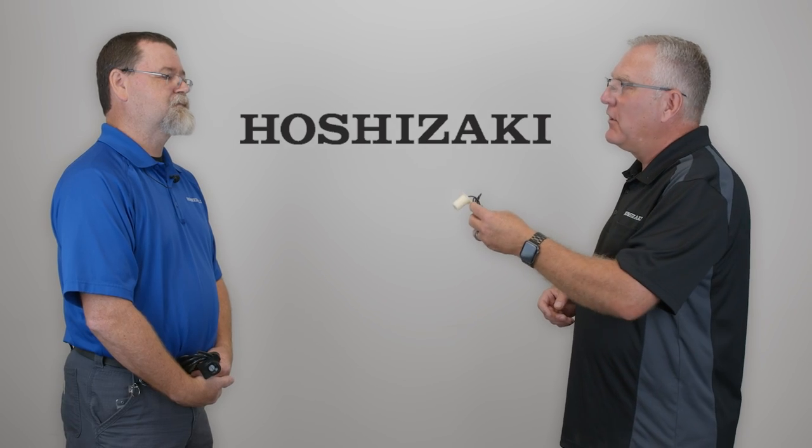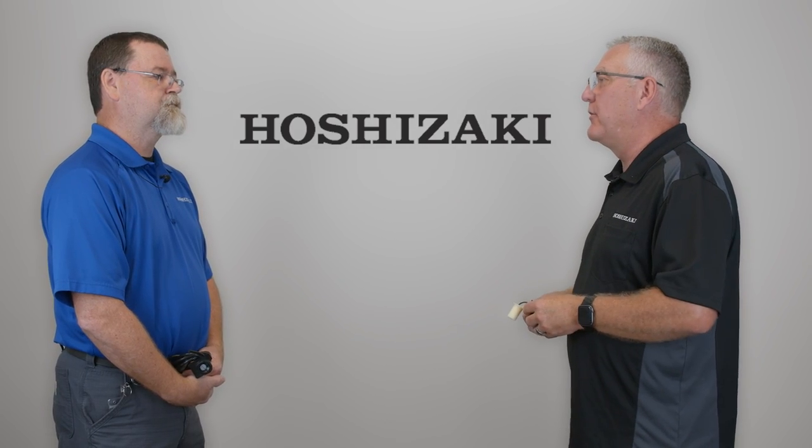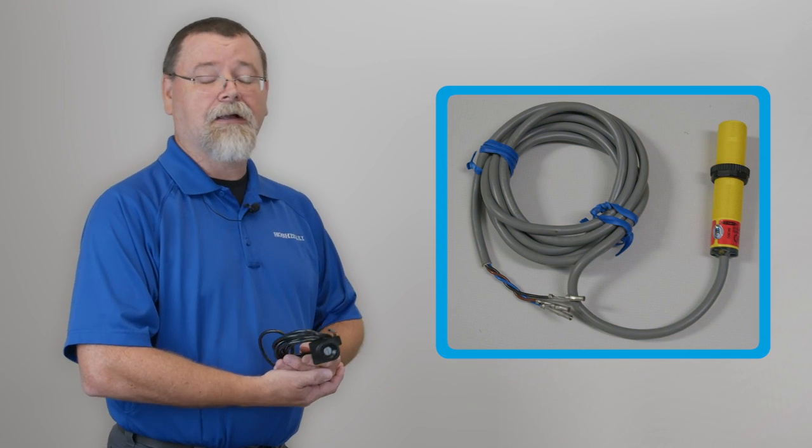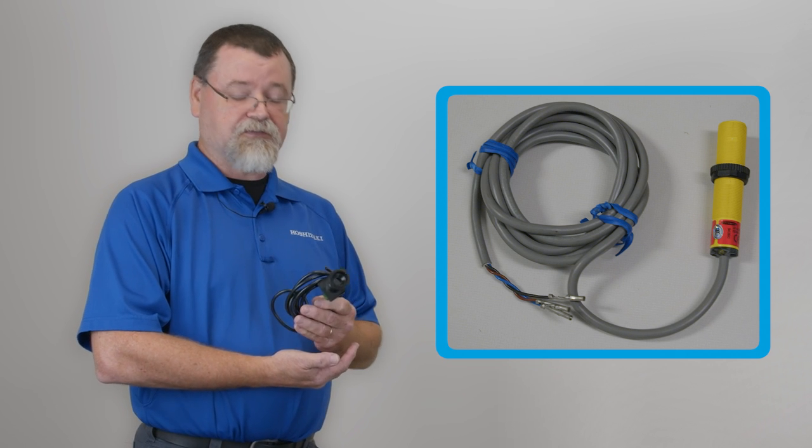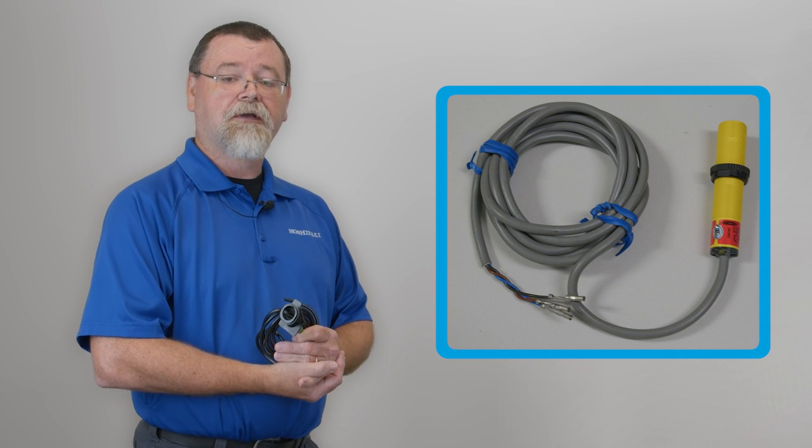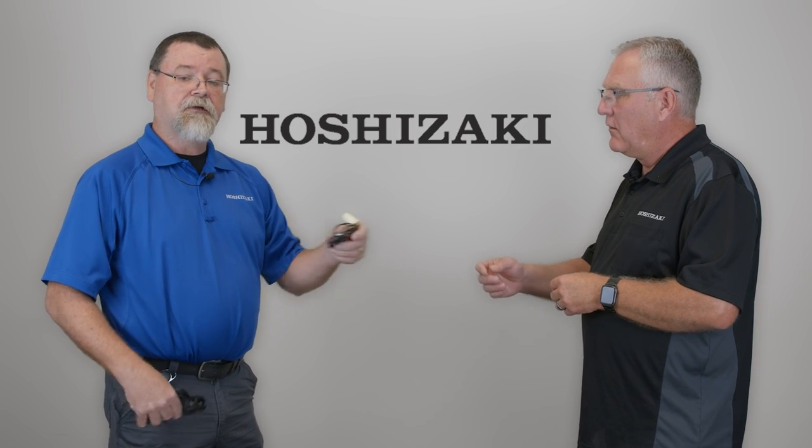Hey Mike, tell me a little bit about the electronic bin control sensors that Hoshizaki uses on their ice makers. Okay Lee, so the sensor I have in my hand now is the infrared sensor that was used on the modular J model Flakers up until August 2023 when we switched over to the ultrasonic bin control. Let me start with how the infrared sensor works.